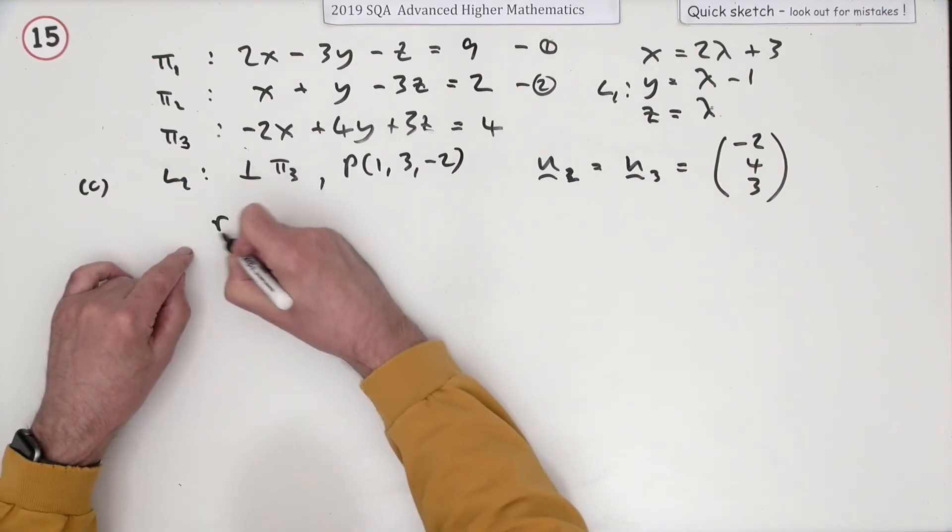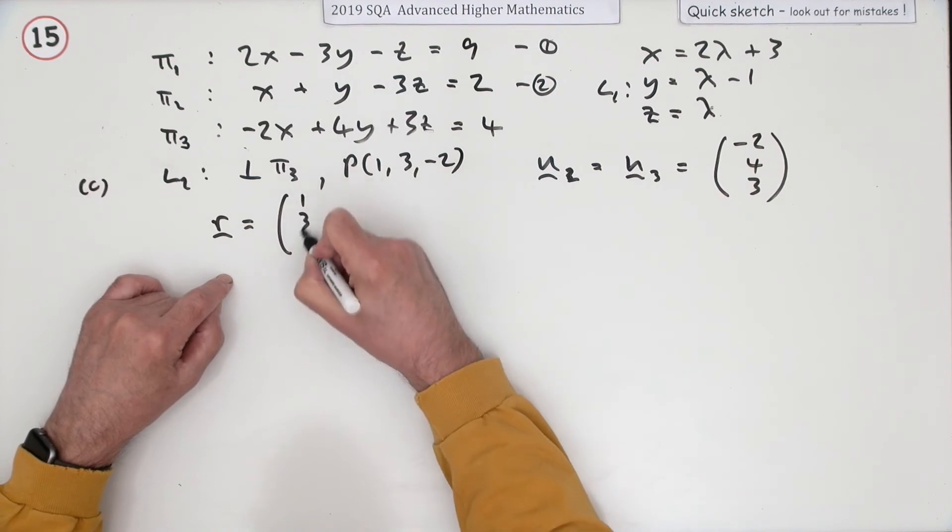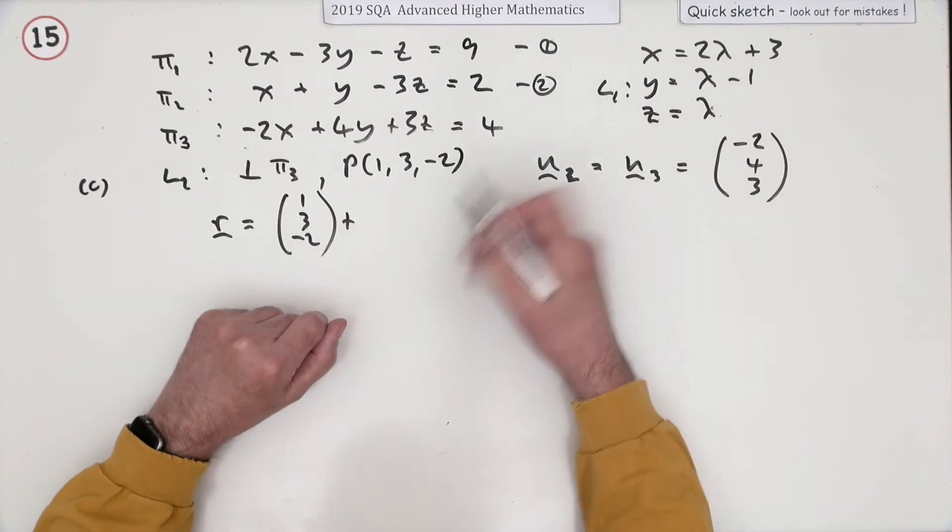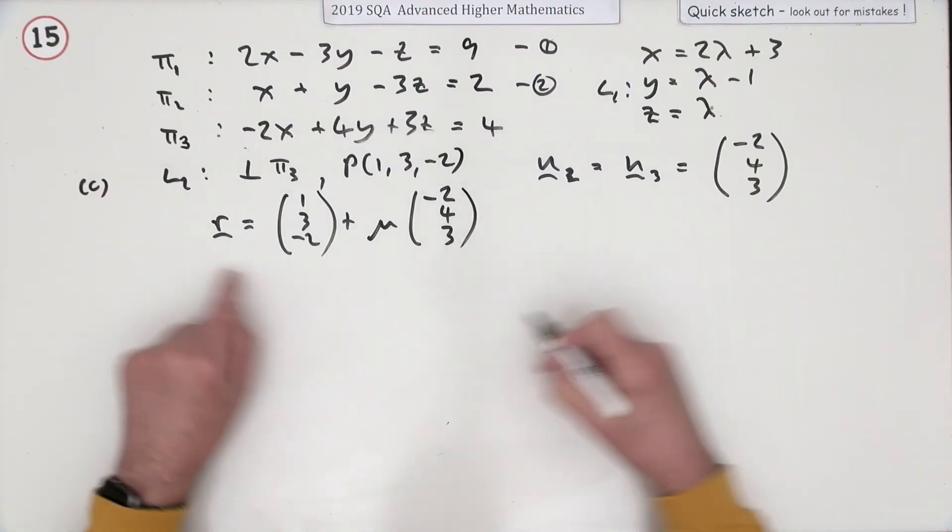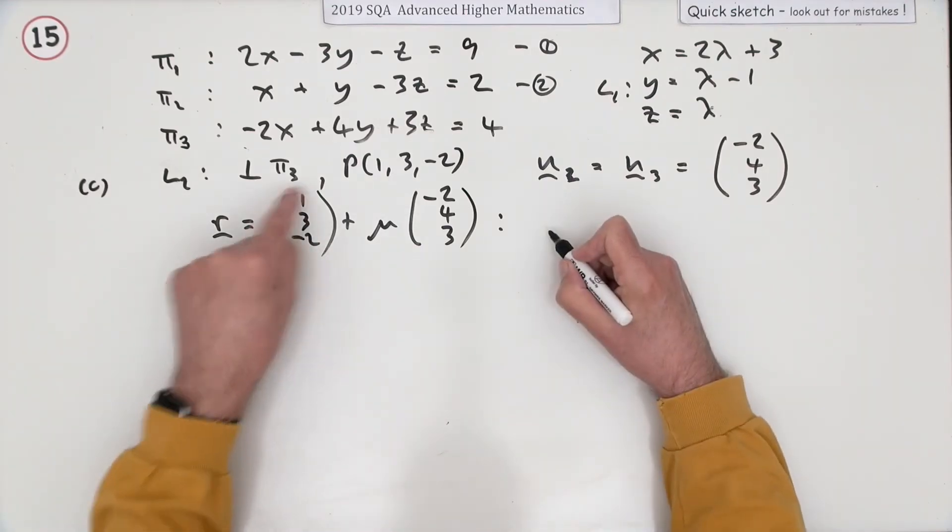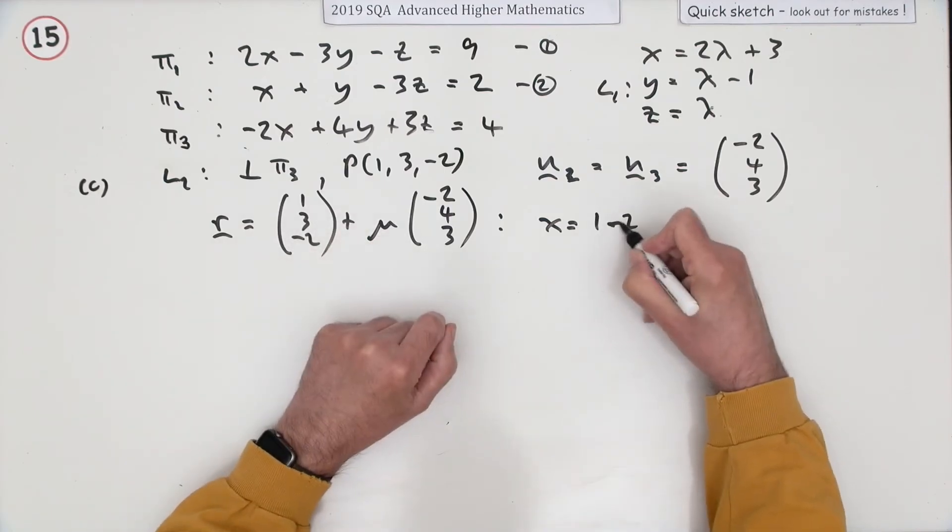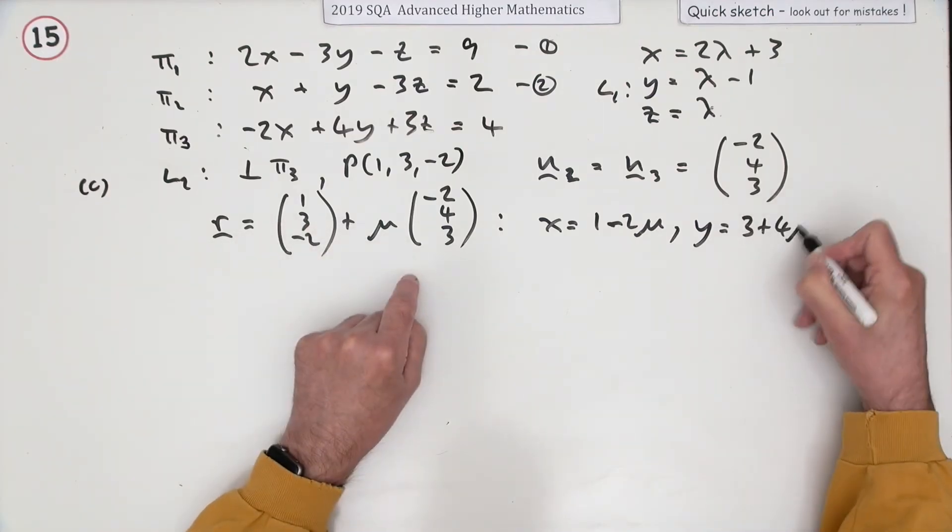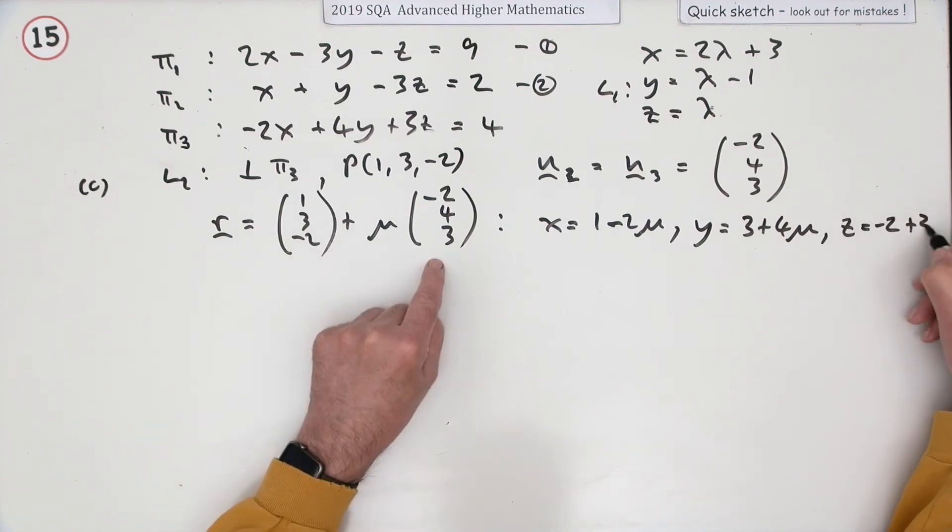I can just construct it now. So that means the general point in this line would be start at any particular point (1, 3, -2) for the position vector, and take steps. I need a parameter. That was lambda, so I could use μ. Take steps of this direction vector. So I can spell this out now. I can get the three parts to L2. Top line: X equals 1 minus 2μ. Y equals 3 plus 4μ. And Z equals negative 2 plus 3μ.